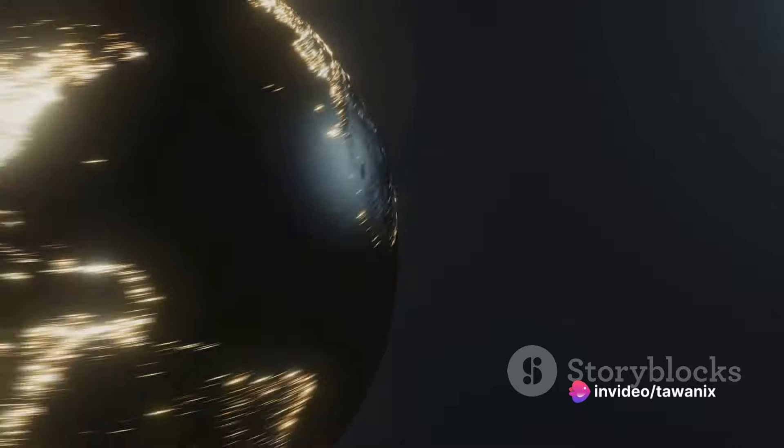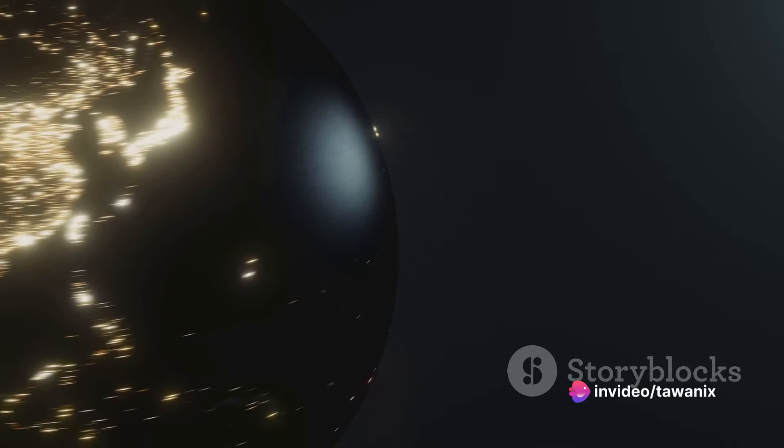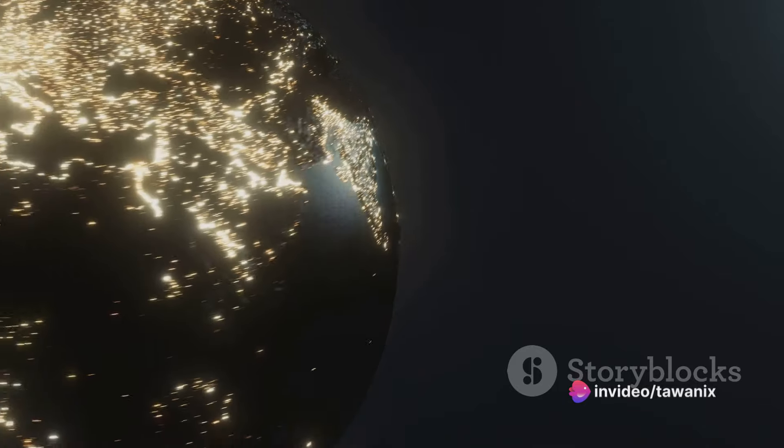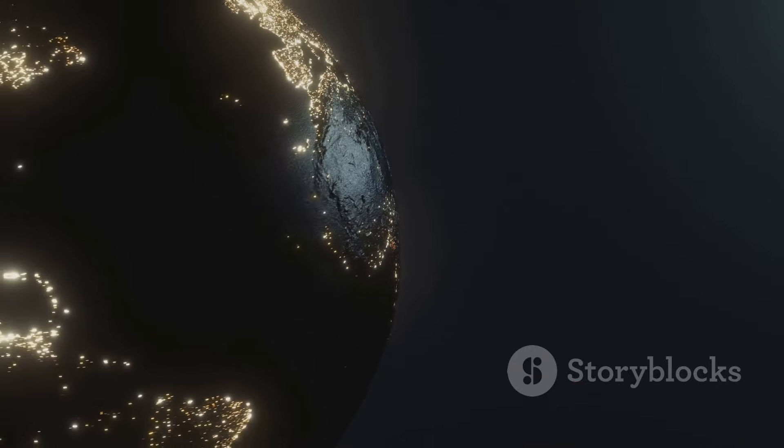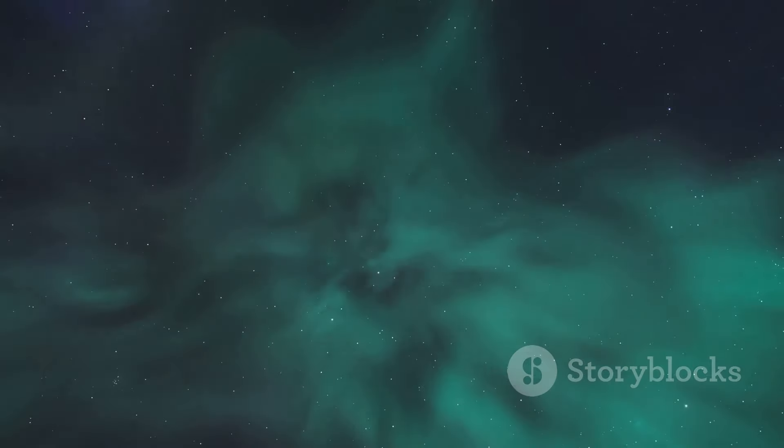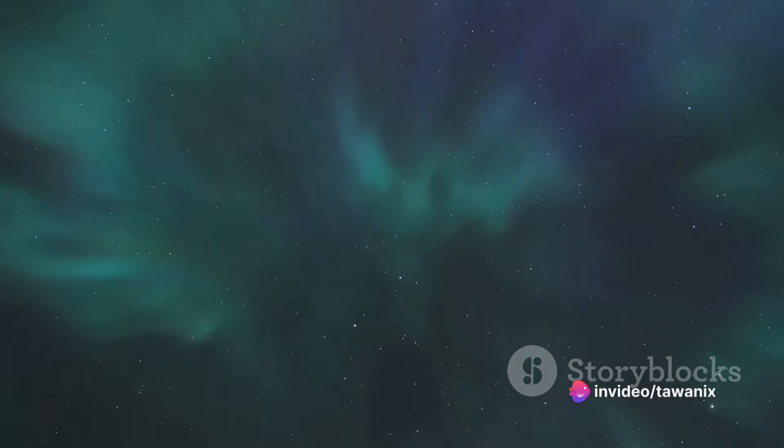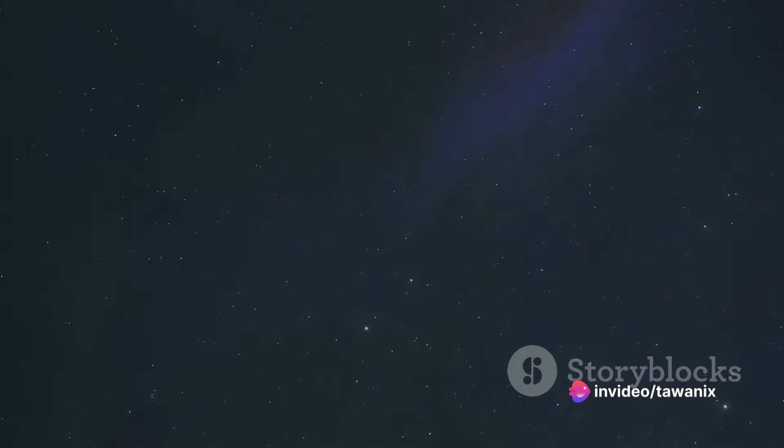This difference in speed isn't because some stars are fast and some are slow. No, all stars are stationary relative to us. It's our spinning Earth that creates this illusion of speed. Imagine standing at the North Pole looking up. The stars would seem to circle around you moving slowly, but as you travel towards the equator they appear to speed up.